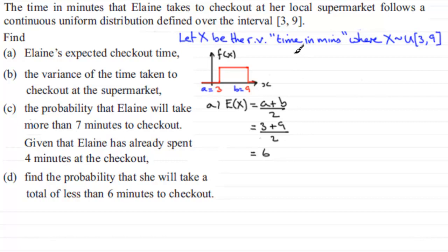Now, we'll have a look at parts B and C. So, in part B, we've got to work out the variance of the time taken to checkout at the supermarket. Now, the variance, var X for short, is given by the formula B minus A, all squared, divided by 12. And again, you should be familiar with this particular formula. And for this example, then, it's going to be 9 minus 3, all squared, all over 12. So, we've got 9 minus 3, which is 6. 6 squared is 36. 36 divided by 12 is 3. So, there's our variance.